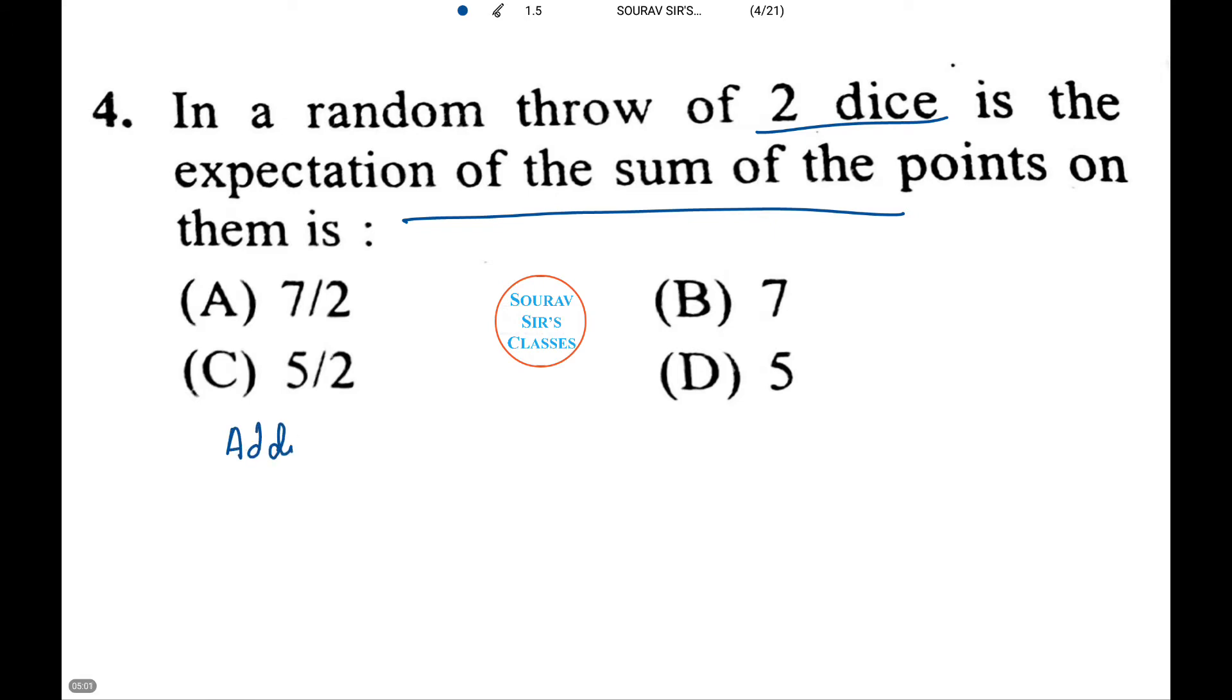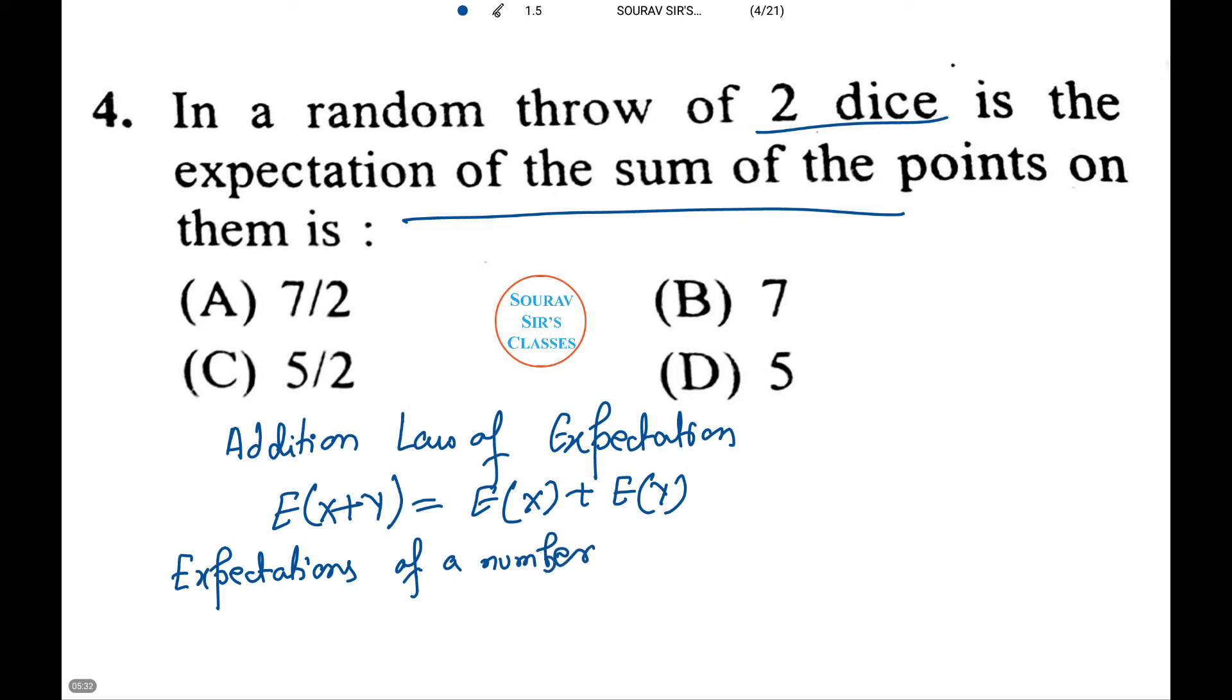Let's see what the law suggests. The addition law of expectation suggests that expectation of X plus Y equals expectation of X plus expectation of Y. Therefore expectation of a number on a die equals 7 by 2.